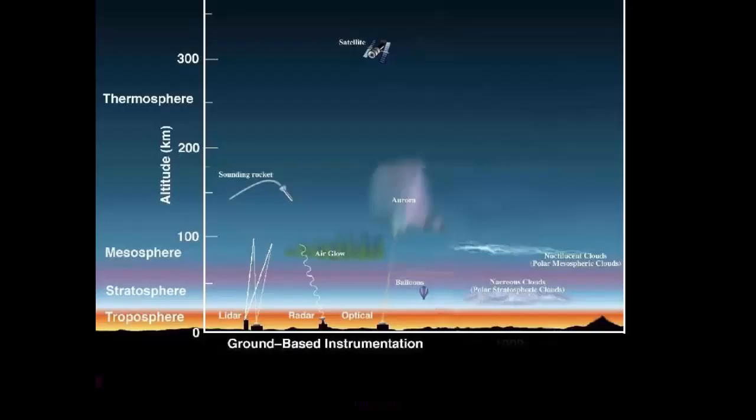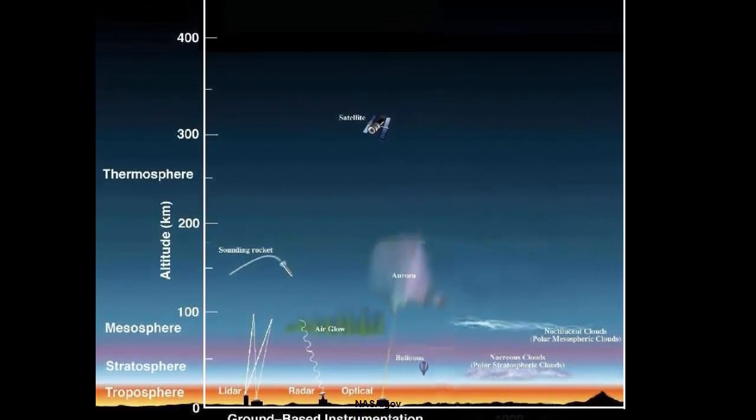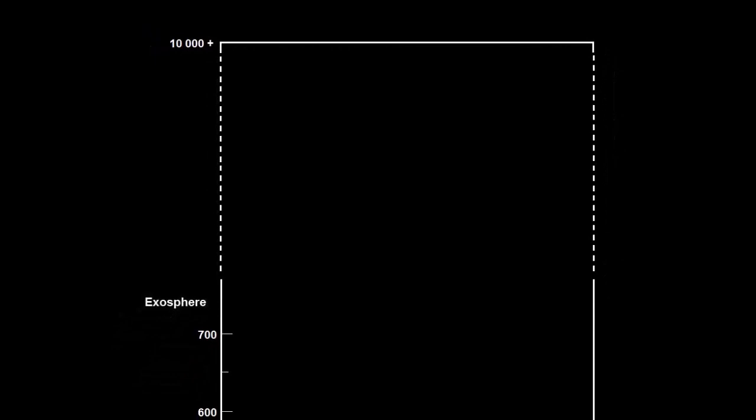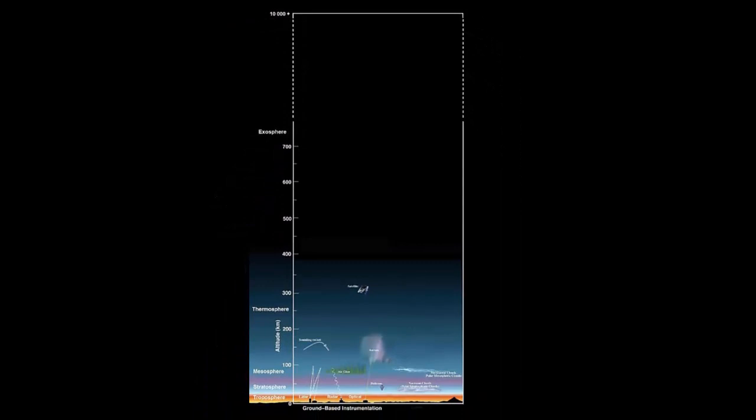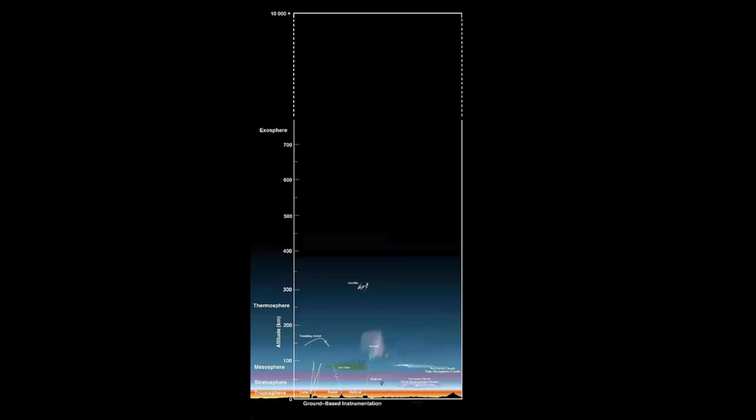This diagram shows the Earth's atmosphere. The exosphere extends from the top of the thermosphere to around 10,000 kilometers altitude. Gas molecules in the exosphere are gravitationally bound to the Earth but are so far apart that they do not behave as gases or effectively interact with each other. The exosphere gradually merges into space — there is no hard edge to the exosphere or to any other atmospheric layer.